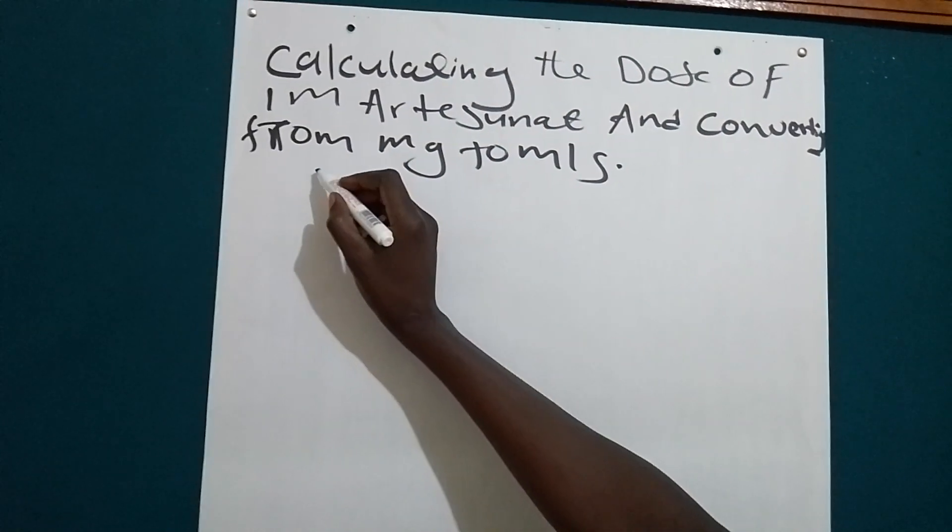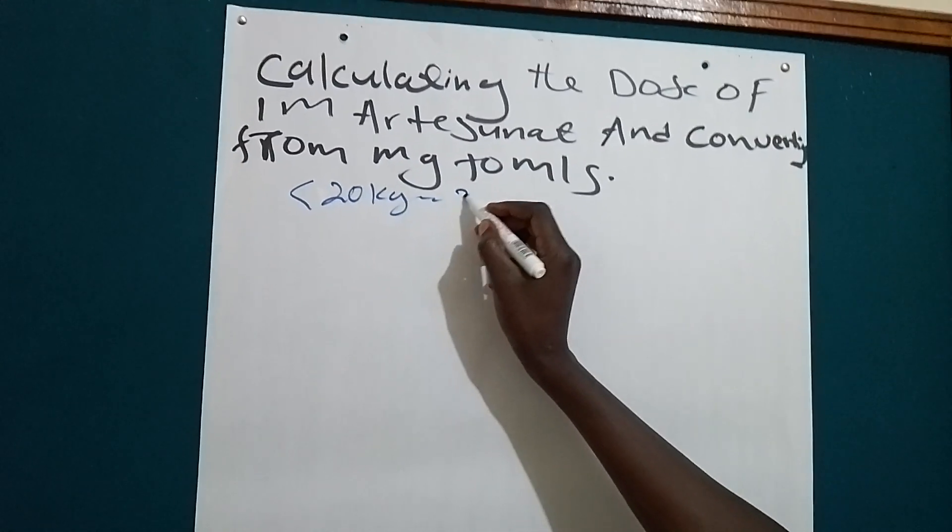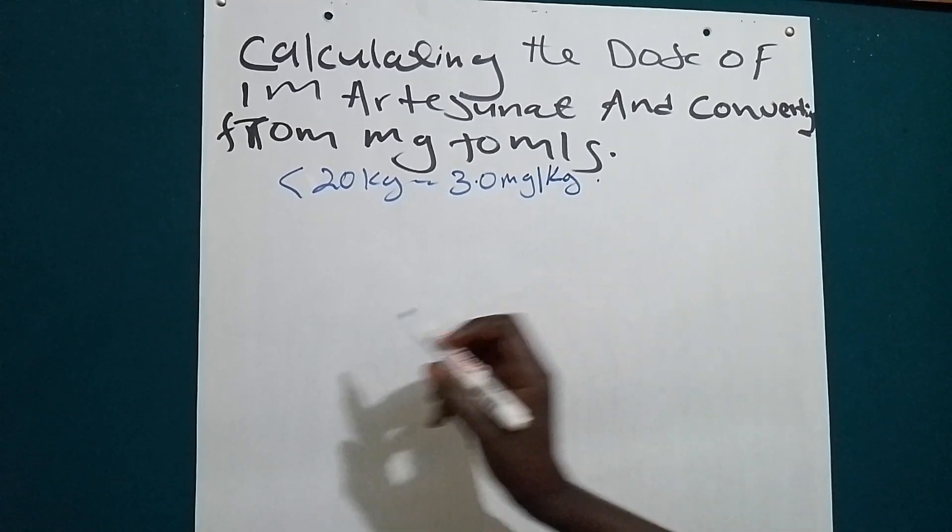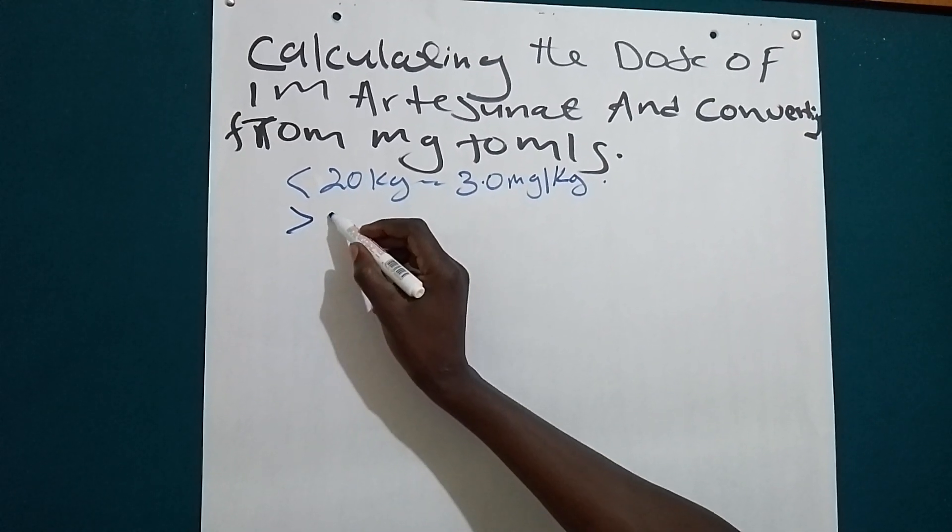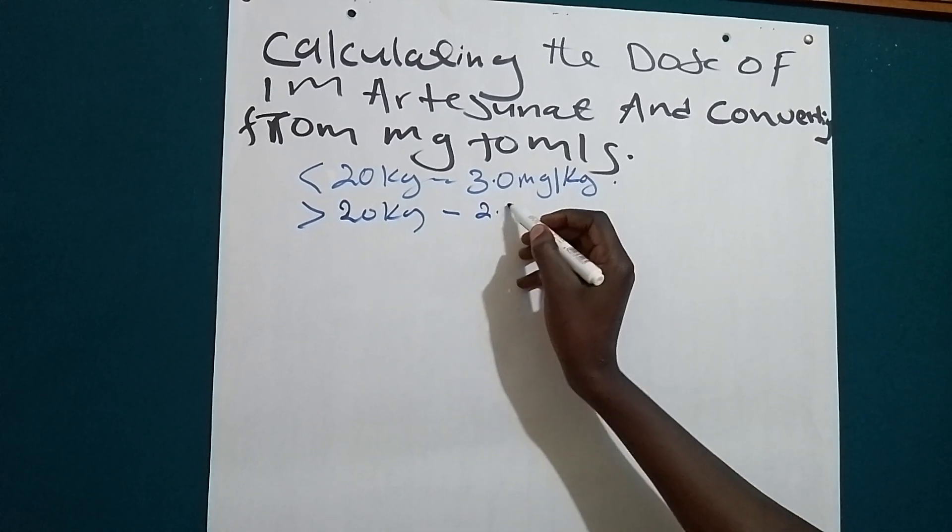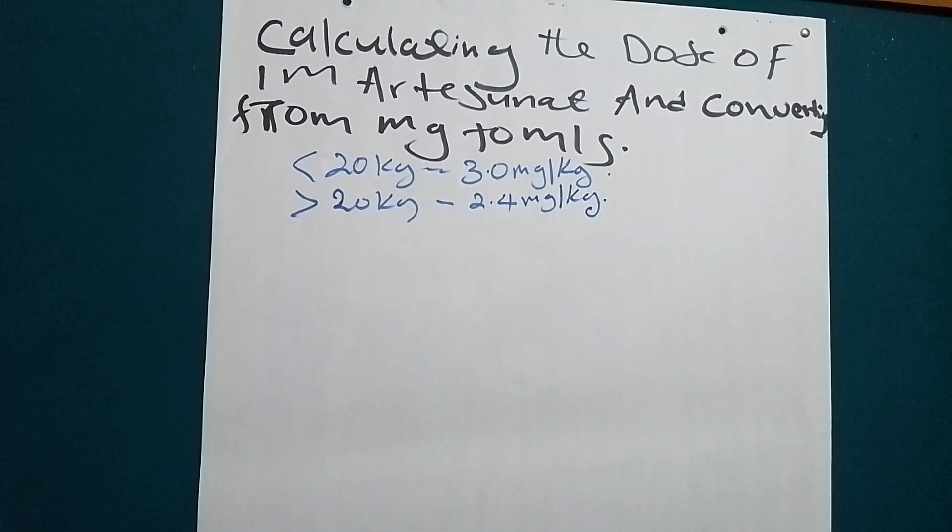For children less than 20 kilograms, you give 3.0 milligrams per kilogram body weight. For those greater than 20 kilograms, you give 2.4 milligrams per kilogram body weight.